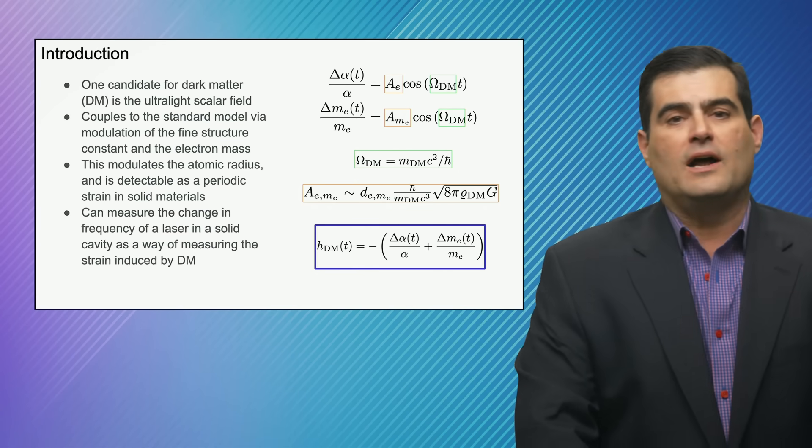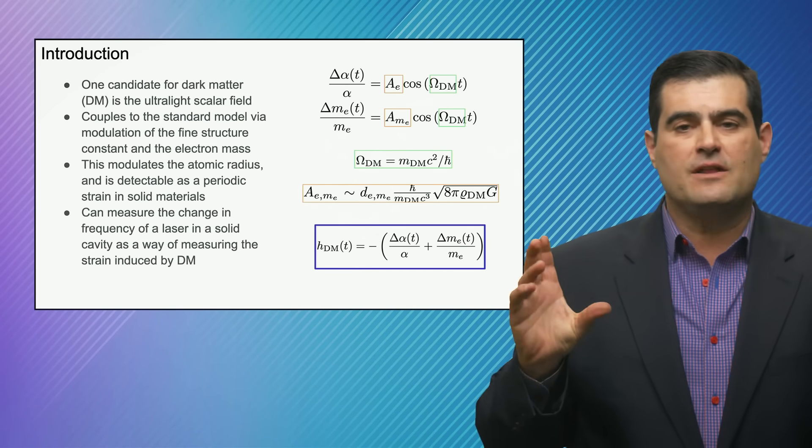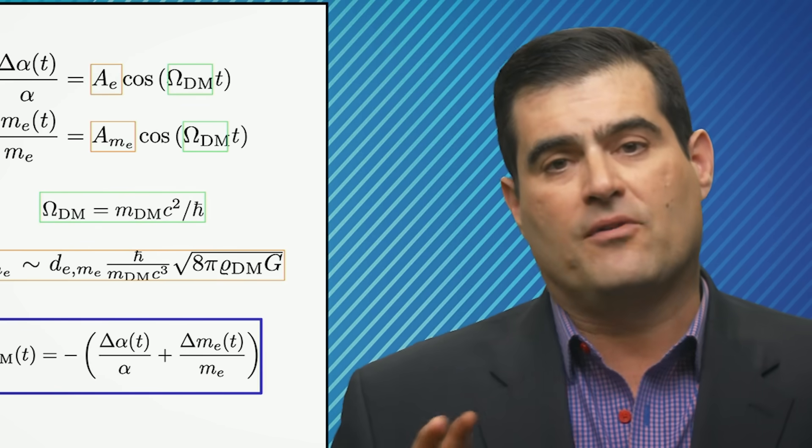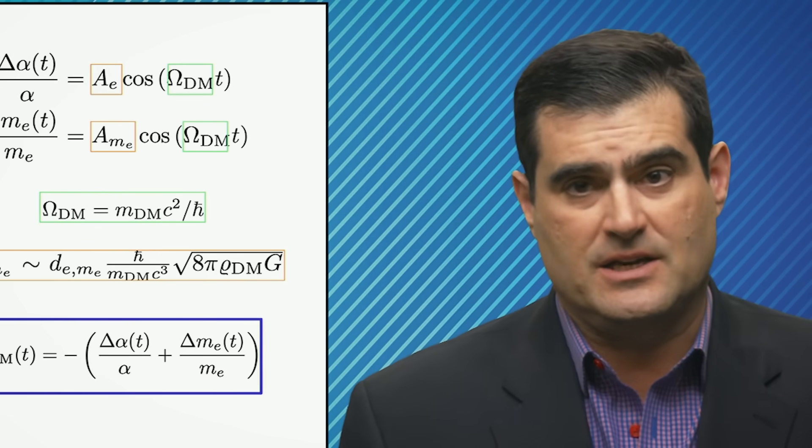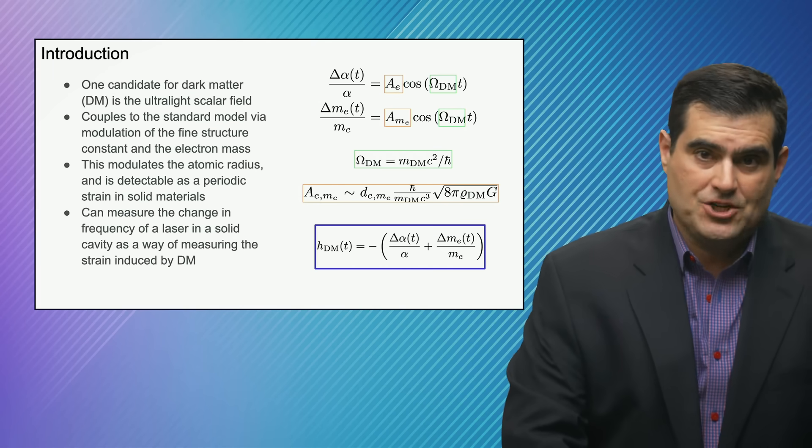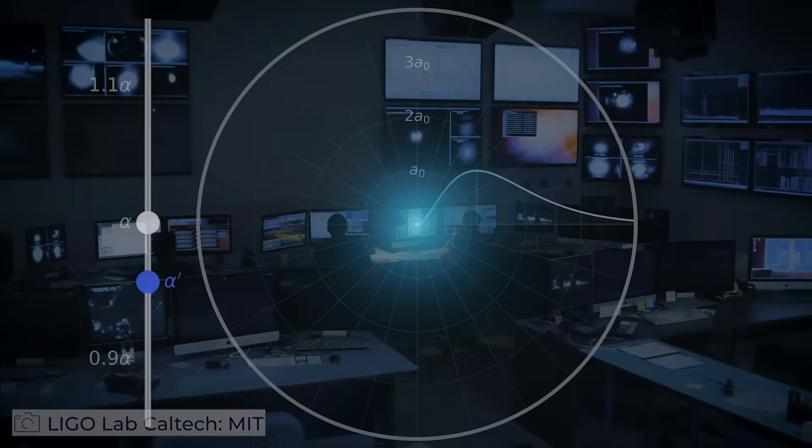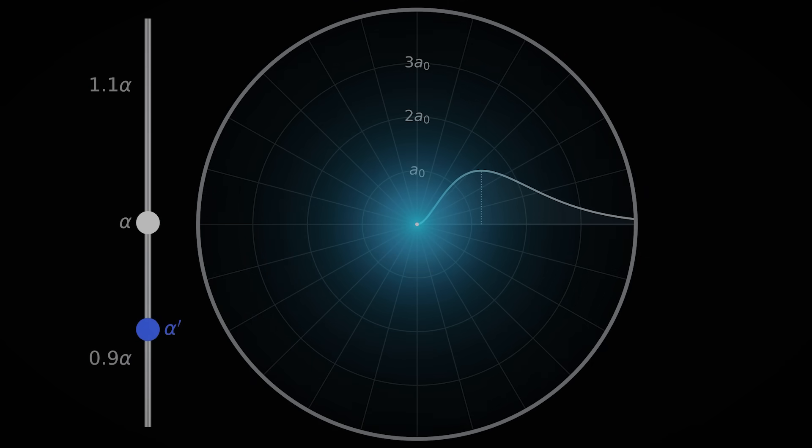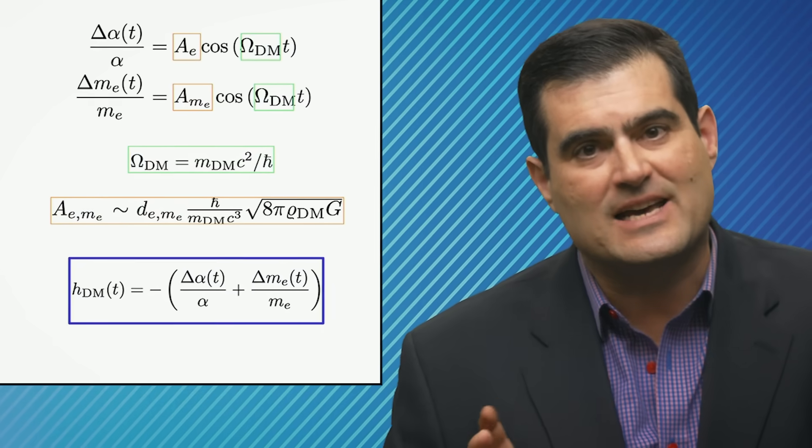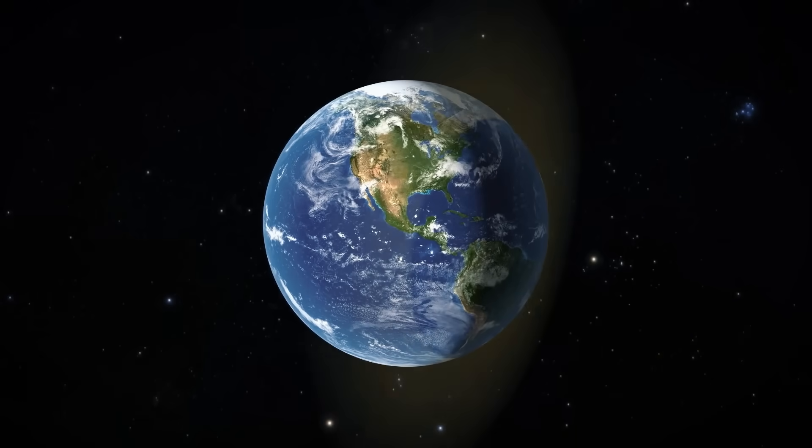Now, if there were a light scalar field, it would change the size of the atoms, which is parameterized by the same fine structure constant, and it would do so in a periodic fashion in a way that LIGO could detect given its exquisite sensitivity to tiny variations in the size and scale of its cavities, of its laser lock cavities that we'll describe in just a moment. So you could measure the frequency of a laser as it oscillates inside of a solid, and it would be exquisitely sensitive to the change of the atomic radius.